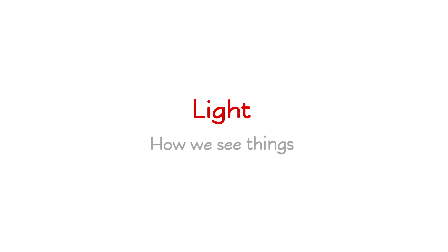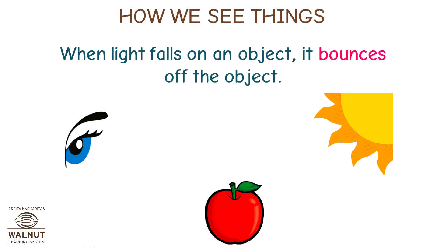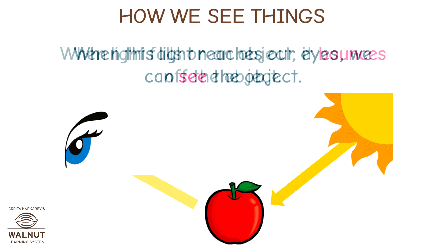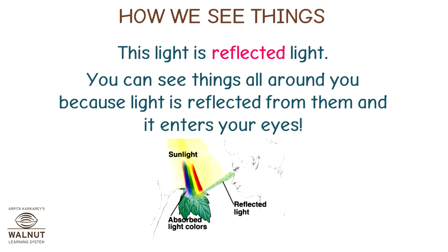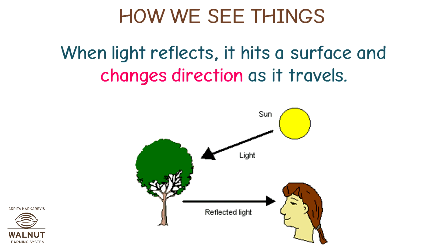Light — how we see things. When light falls on an object, it bounces off the object. When this light reaches our eyes, we can see the object. This light is reflected light. You can see things all around you because light is reflected from them and it enters your eyes. When light reflects, it hits a surface and changes direction as it travels.